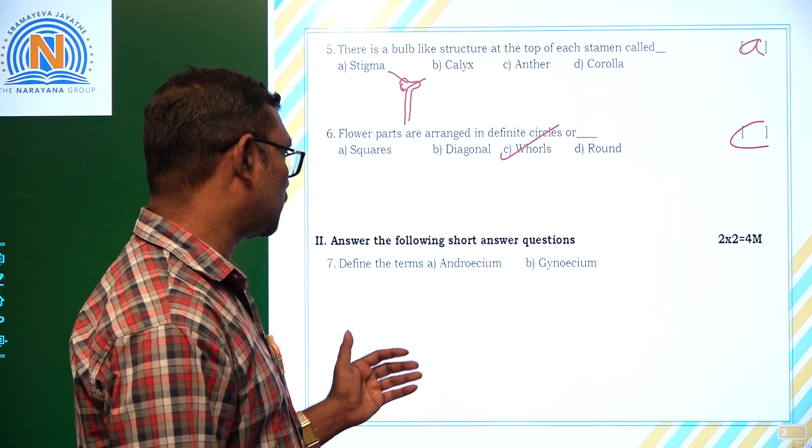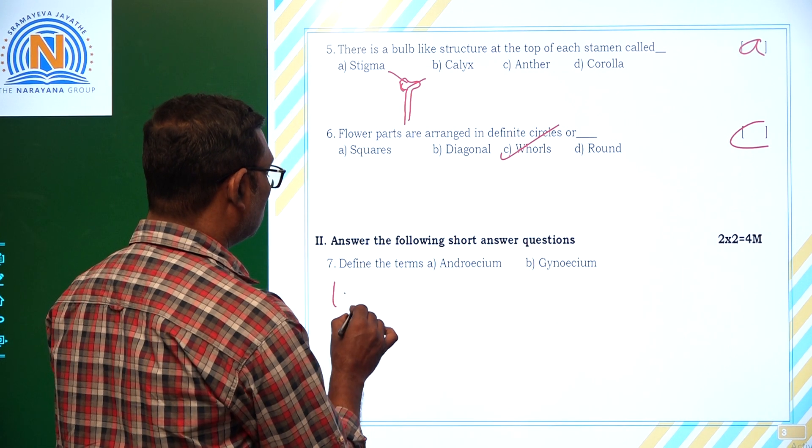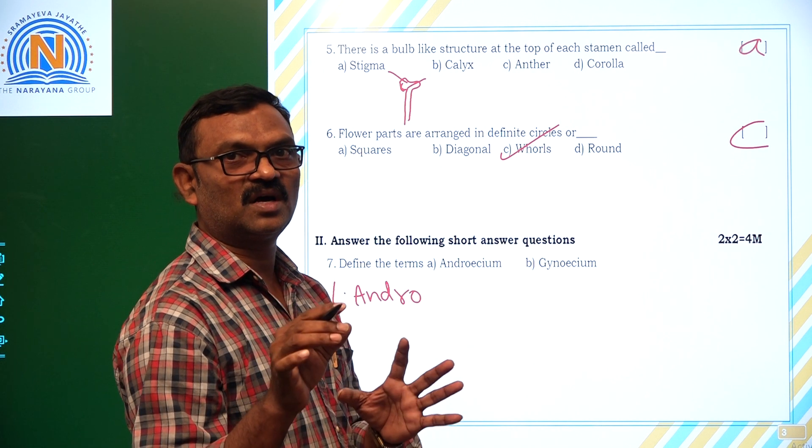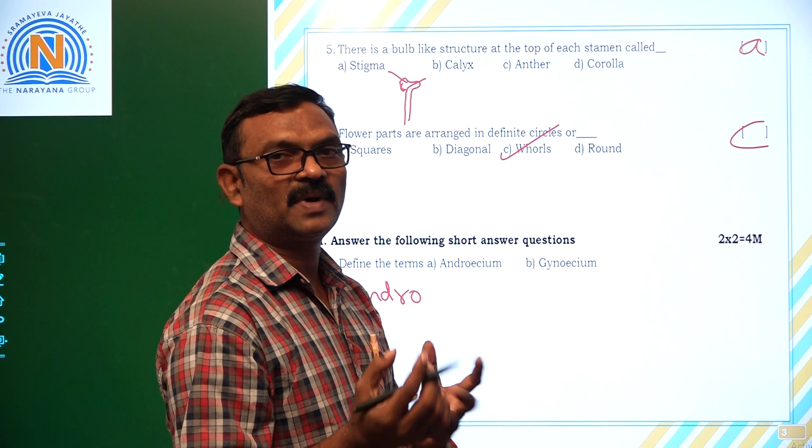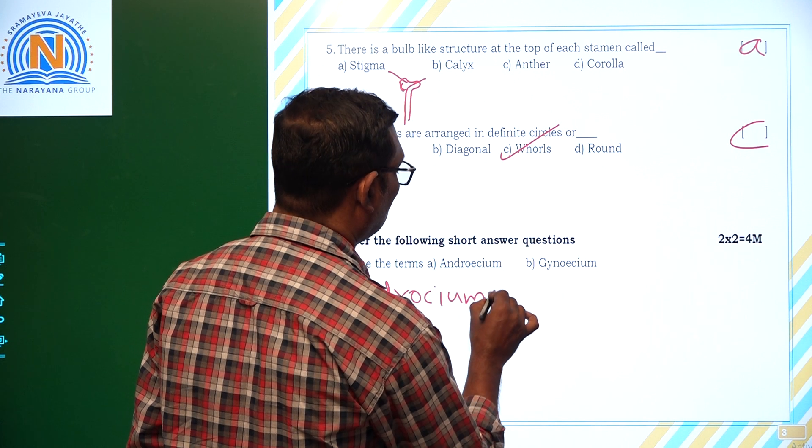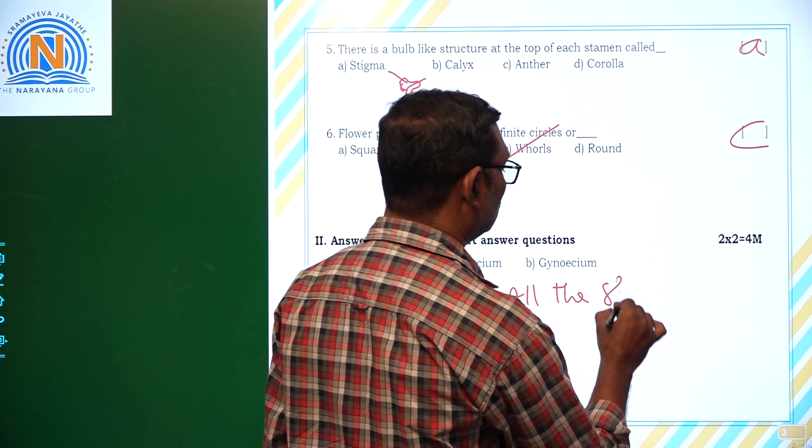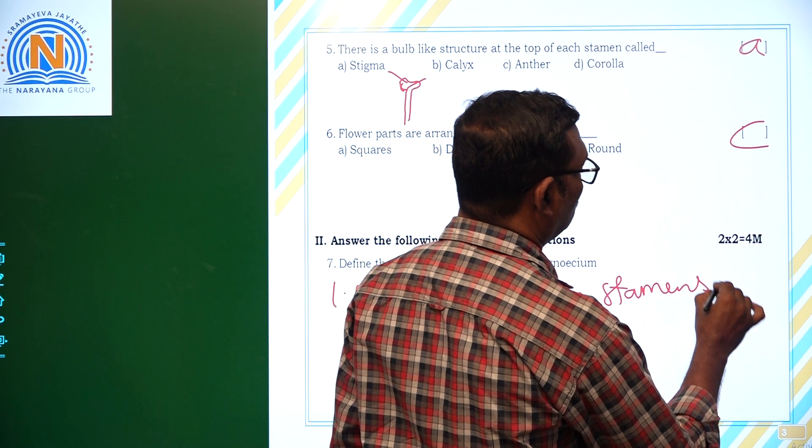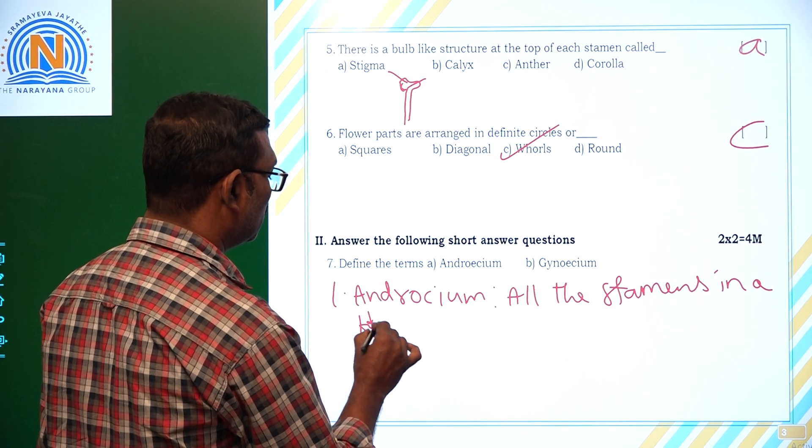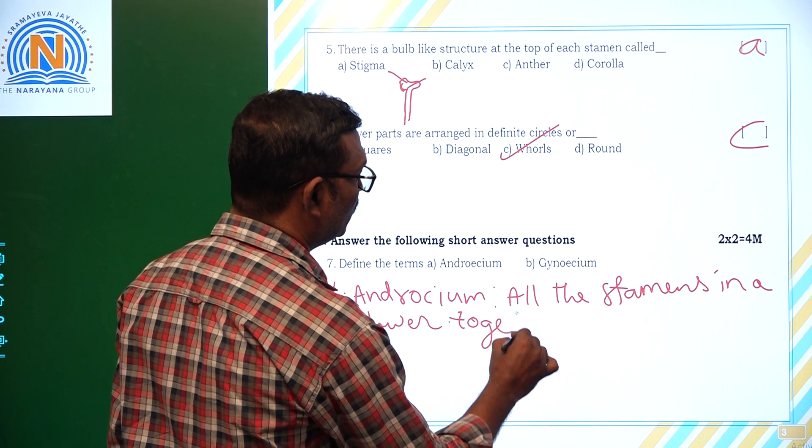Define the terms androecium and gynoecium. Androecium means all the stamens present in the flower together called male part are androecium. All the stamens in a flower together form androecium.